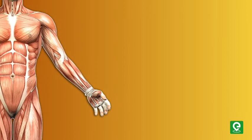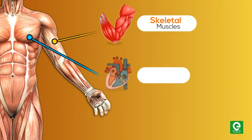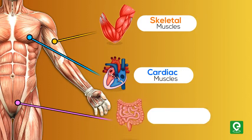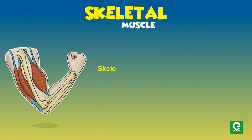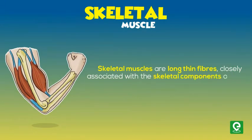Based on their location in the body, muscles can be categorized into three classes: number one, skeletal muscles; number two, cardiac muscles; number three, smooth muscles. Skeletal muscles are long thin fibers closely associated with the skeletal components of the body and perform the function of contraction.